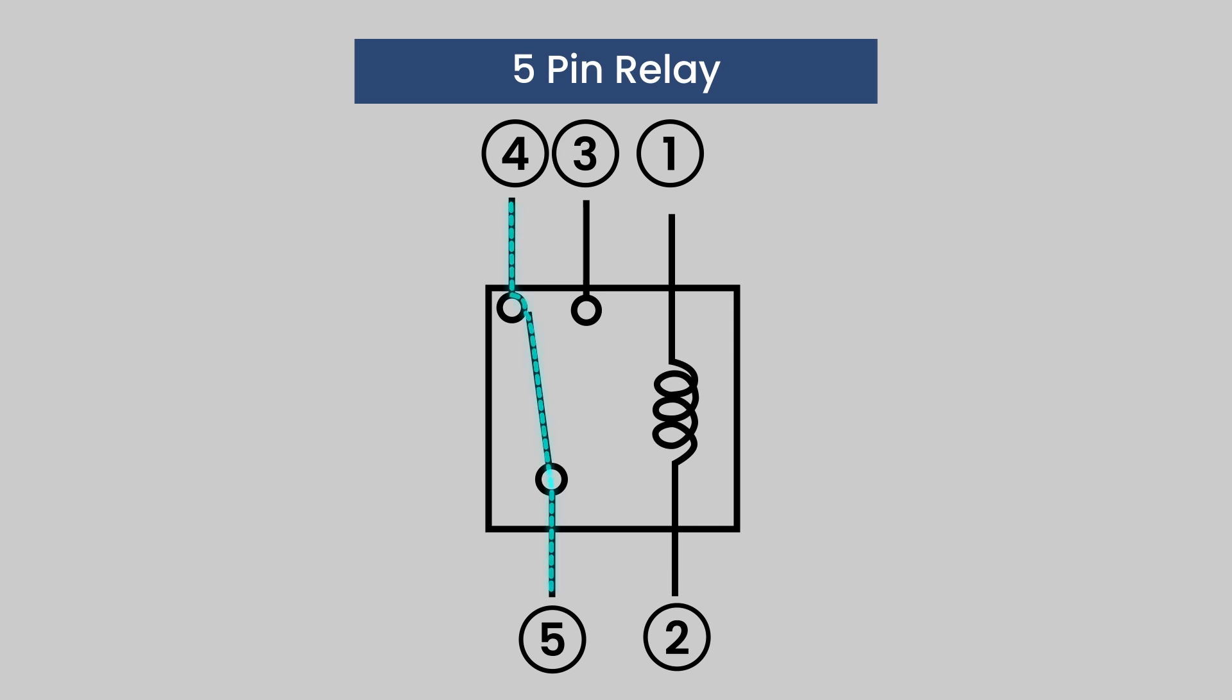When a five pin relay is de-energized or off, pins four and five have continuity, and when it is on, pins three and five have continuity.